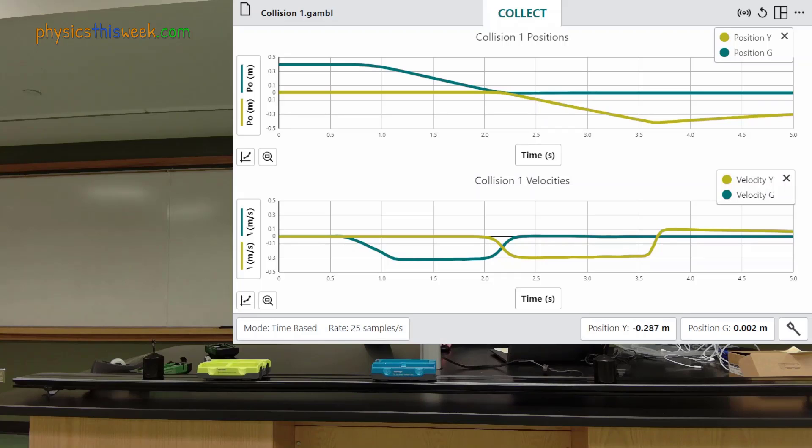If you look at the data traces you can see this information. For about the first half second of data collection both carts are at rest. Their position plots are horizontal lines. At about 0.5 seconds I push the green cart giving it an acceleration in the negative direction.